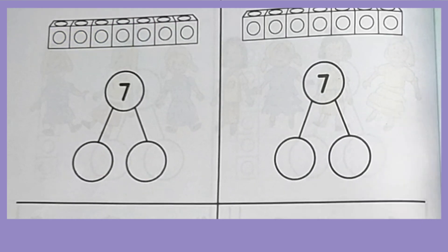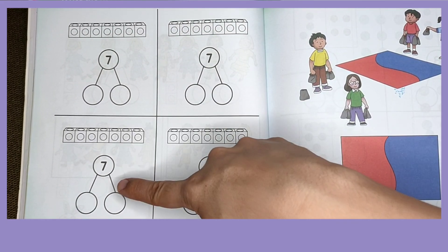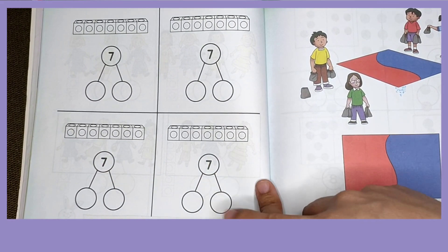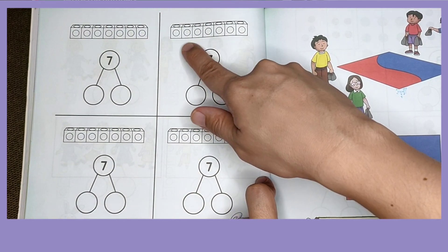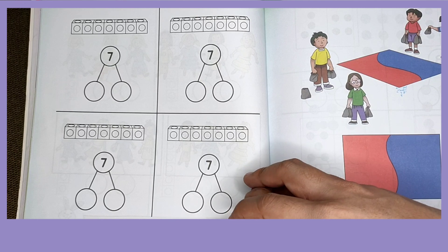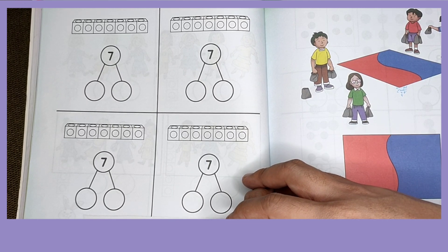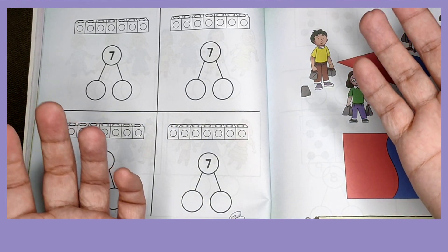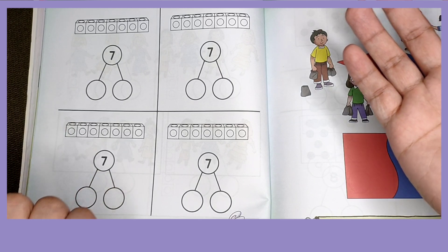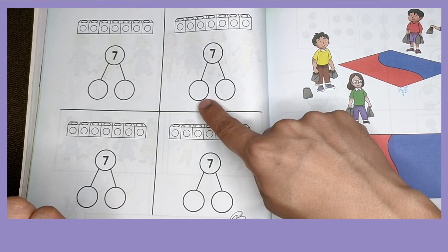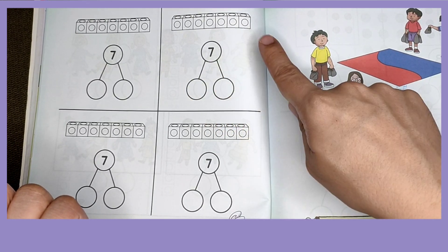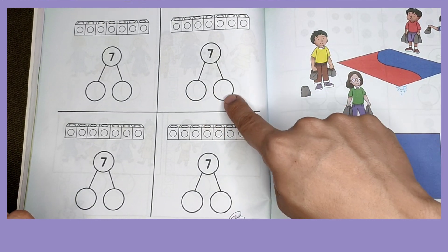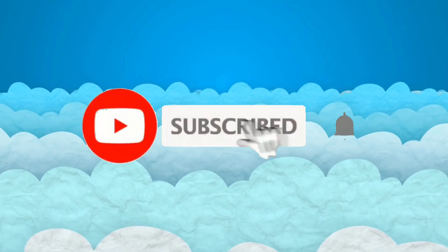Now, I want you to do it on the rest of these number bond charts. I want you to color the cubes using two different colors. Color them in whatever way you like. You count the first color and put it on the first circle, and then you count the second color and put it on the second circle.